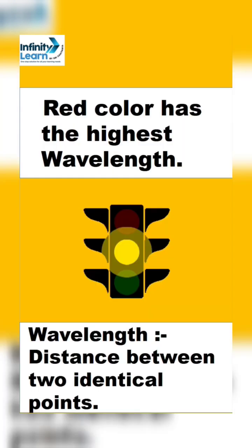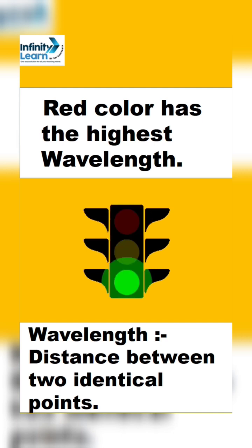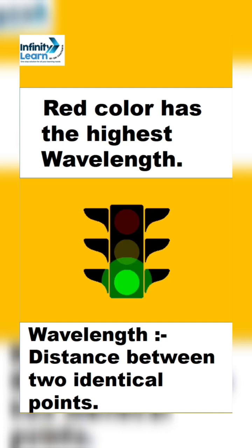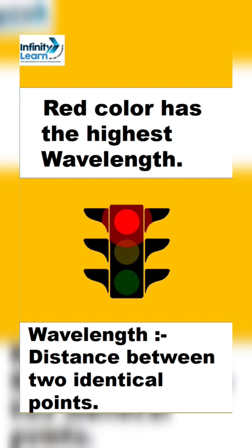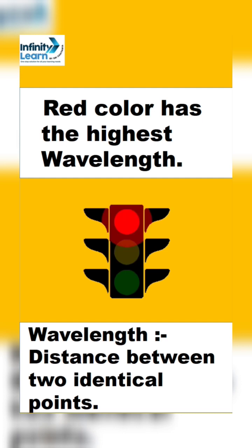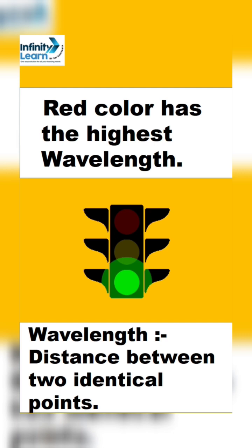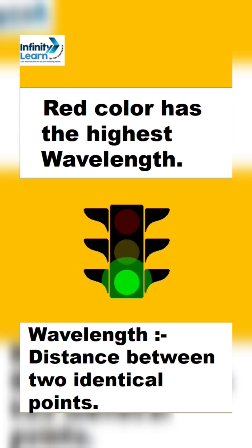As red color scatters the least, it has the highest wavelength. Wavelength is basically a distance traveled by two identical points. Therefore, red color can travel a long distance without getting deviated. So, danger signals are marked in red color so that in fog or in extreme climate conditions, a person can easily identify that there is a danger ahead.